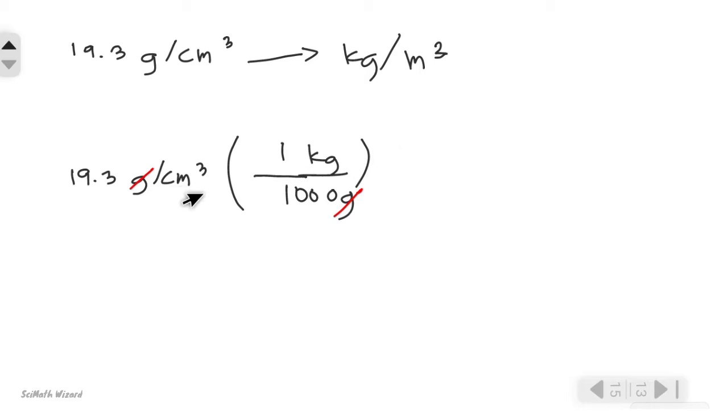To cancel out the cubic centimeter and convert that into cubic meter, we should also multiply by the conversion factor, which is 100 centimeters equals one meter. Since this is not cubic yet, let's cube this one in order to cancel the cubic centimeter here, so we're left with cubic meters.